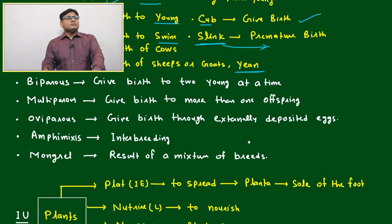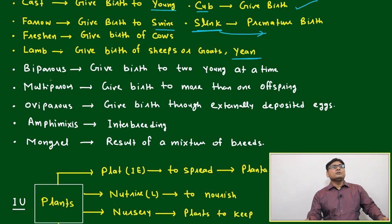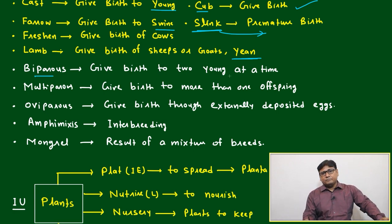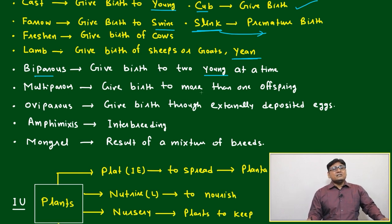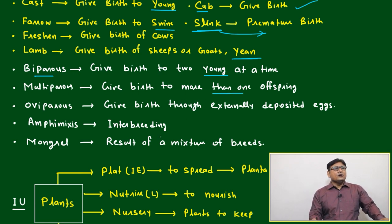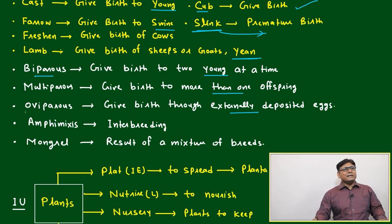'Biparous' means give birth to two young at the same time, not at a gap. 'Multiparous' means give birth to more than one offspring at a time. 'Oviparous' means give birth through externally deposited eggs — this is an important word we will use repeatedly.